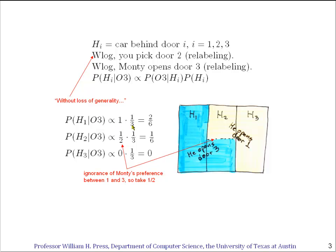That equals the prior probability of 1/3 times the probability of the data given the hypothesis. Now, if we're in hypothesis 1 — so that the car is behind door 1 — and you've picked door 2, then Monty is forced to open door 3, so the probability of the data given the hypothesis is 1.